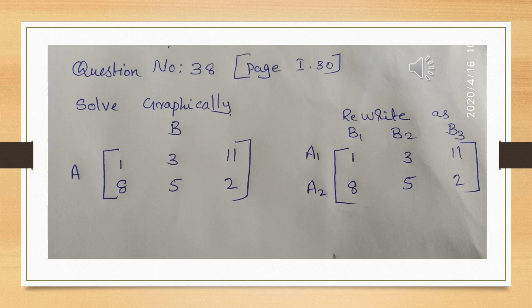We are going to look at the question: solve graphically. A and B are the two players. A is the minimizing player and B is the maximizing player. We are going to rewrite the strategies as A1, A2 for player A, and B1, B2, B3 for player B.